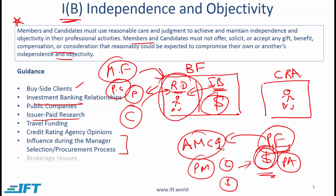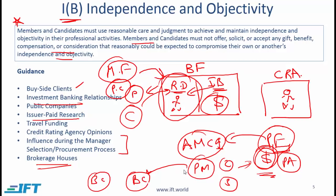Brokerage houses present yet another scenario. The portfolio manager at the asset management company needs to go through brokerage companies to have trades executed. Several brokerage companies will vie for this business since they make money by executing trades. Therefore, they might give expensive gifts to portfolio managers in order to influence and encourage them to direct business their way.